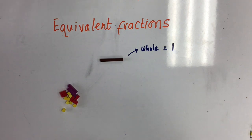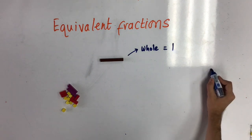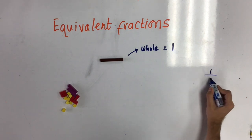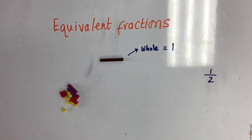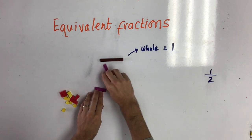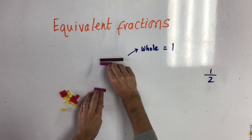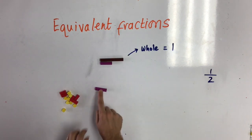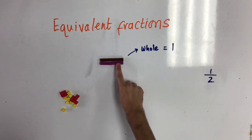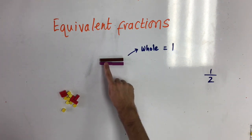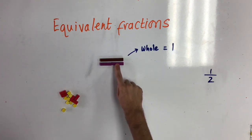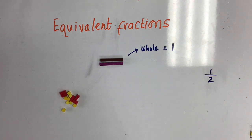I'm going to show you half using some purple rods. Let's remember that half is splitting an object or a number into two equal parts. You can see here that I need two purple rods that are equal to show half.